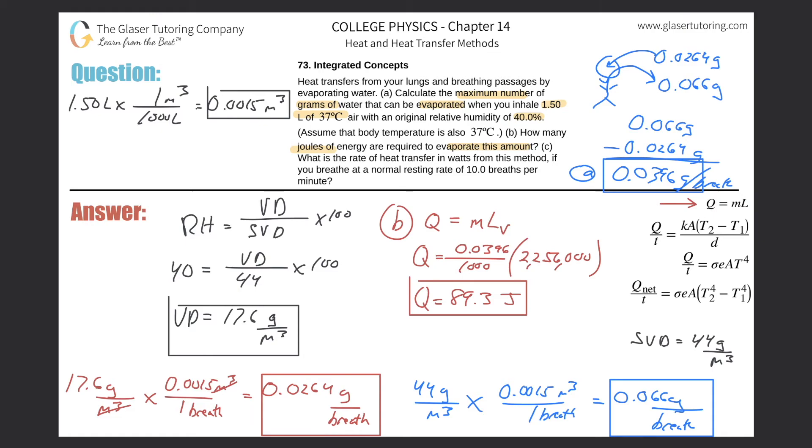Now, let us see. What is the rate of heat transfer in watts from this method if you breathe at a normal resting rate of 10 breaths per minute? Remember that this is the amount of joules that are going to be involved in the heat transfer per breath. Remember, everything was per breath. I kept saying per breath. So this is also per breath.